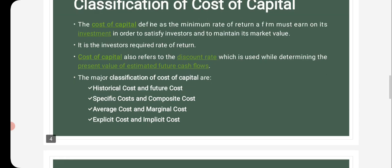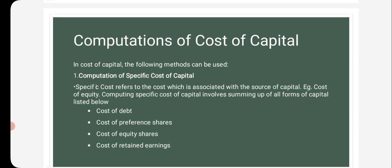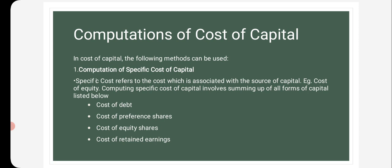The computation of cost of capital involves two categories: first, computation of specific cost; second, computation of composite cost. The specific cost includes cost of debt, cost of preference shares, cost of equity shares, and cost of retained earnings.